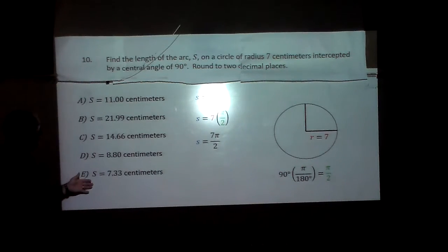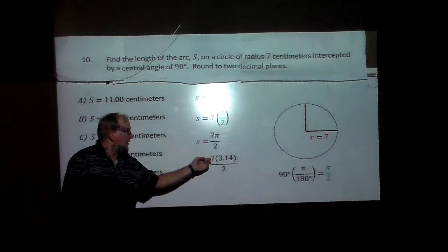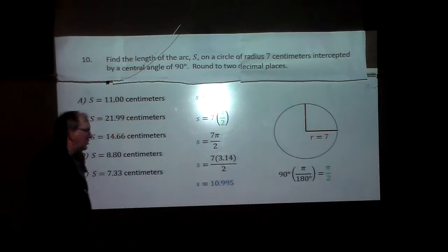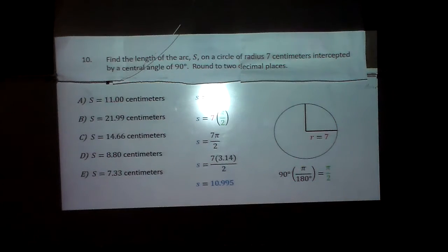Notice that's not here. Well, let's put 3.14 in for pi. 7 times 3.14 divided by 2, which is 10.995, which will round close to 11.